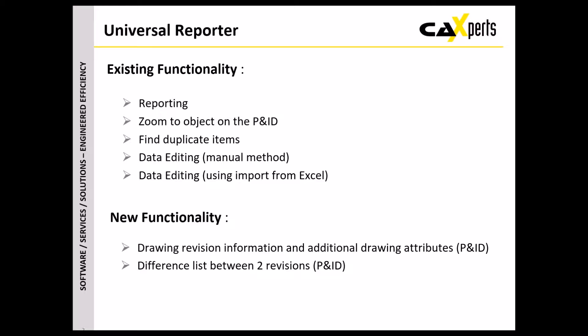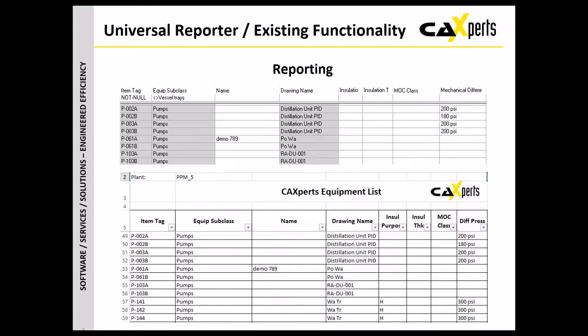Then, we will cover data editing in the interface of Universal Reporter directly, but also how to use import from Excel to update data for PID, for 3D, and then write it back to the original application. From the point of view of new functionality, it is going to be a little bit more PID specific. We have added a possibility to extract drawing revision metadata from the database and also some additional drawing attributes. I will also show how you can create a difference list between two PID revisions — this is the first time in the PID area we are able to extract frozen data and not the actual current data from the database.